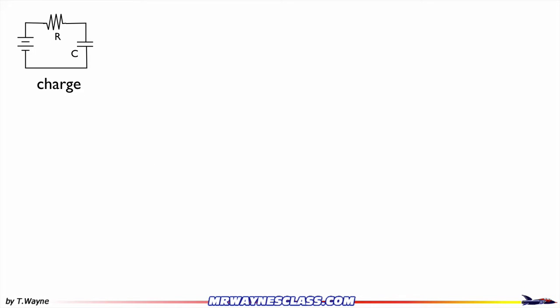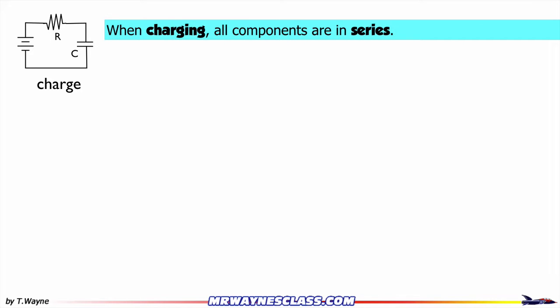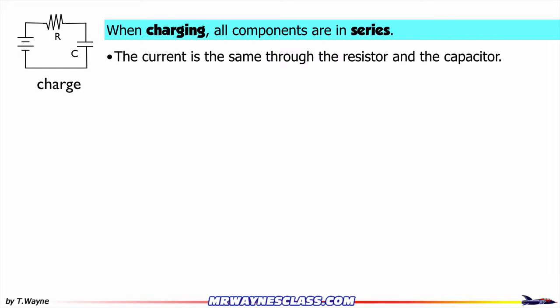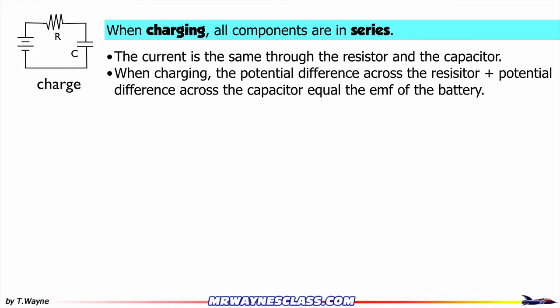This is the charging RC circuit. It consists of a battery, a resistor, and a capacitor. All three of these elements are in series with each other. The current through the resistor is the same as the current through the capacitor. Another characteristic of this circuit is when charging, the potential difference across the resistor plus the potential difference across the capacitor equal the EMF of the battery.